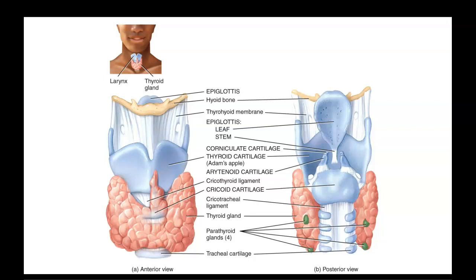Underneath you also see C-shaped rings of cartilage that keep the trachea open and prevent it from collapsing. These rings go about three-fourths of the way around, leaving the back section open. Posteriorly, behind that open section, sits the esophagus, which leads to the stomach.